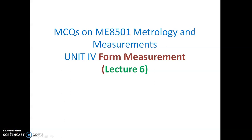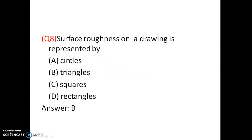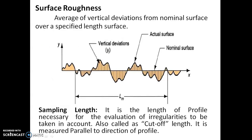For metrology and measurement subject, the remaining multiple choice questions on form measurement unit 4 is presented in this video. Surface roughness on a drawing is represented by triangles. The answer is B — surface roughness can be represented by triangles.